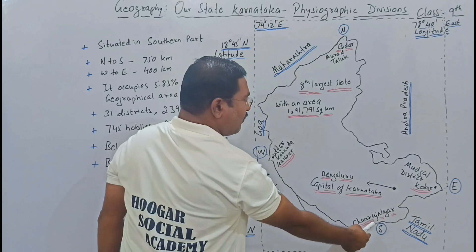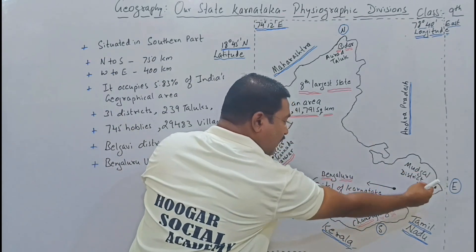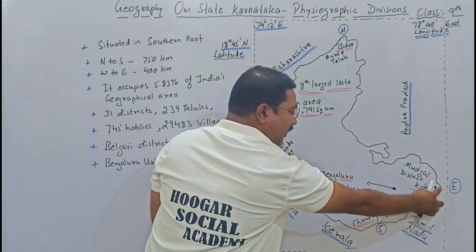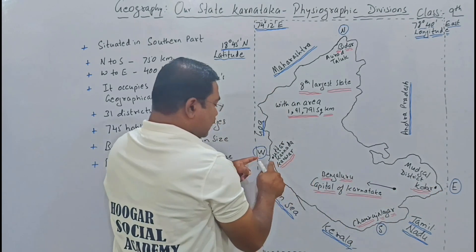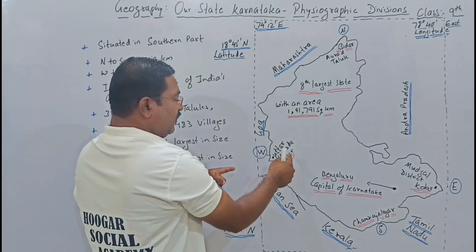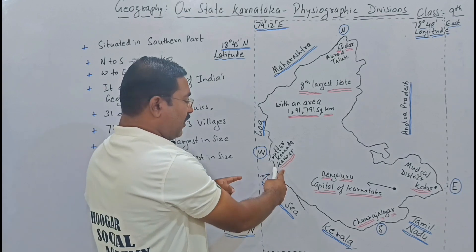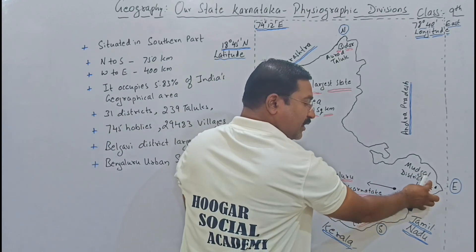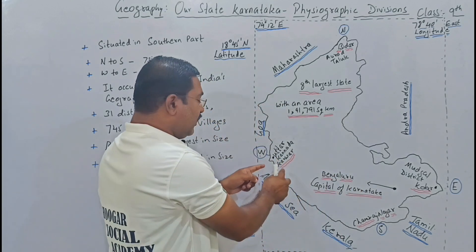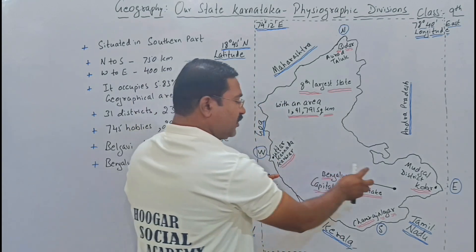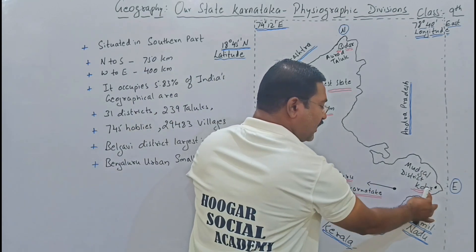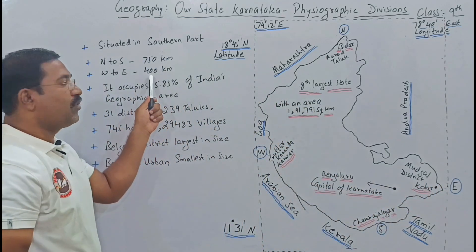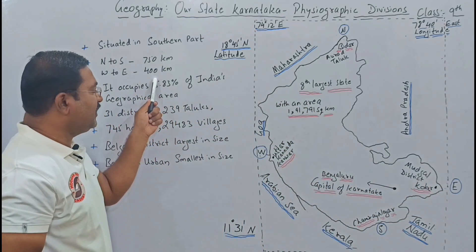From west to east, starting from Uttara Kannada district's Karwar to the Mudgal area in Kolar district, the stretch is 400 kilometers. So Karnataka extends 400 kilometers from west to east, from Karwar to Kolar's Mudgal district.